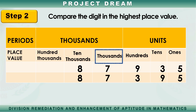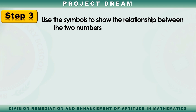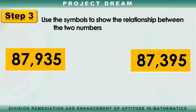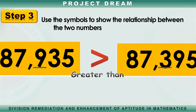We will then go to the 1,000s place — again the same digit 7 in the thousands place. Now compare the digits in the 100s place. In this example, it has different numbers: 9 and 3. Since 9 and 3 are different, we already have a different digit in the hundreds place, so we do not need to go to the tens or ones place. Step 3: Use the symbol to show the relationship between 87,935 and 87,395. Since 9 is greater than 3 in the hundreds place, 87,935 is greater than 87,395.